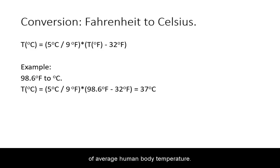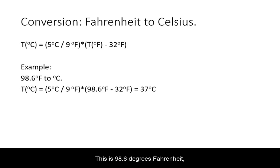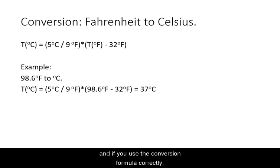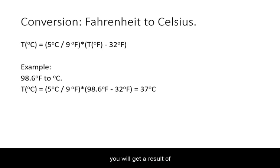Take the example of average human body temperature. This is 98.6 degrees Fahrenheit, and if you use the conversion formula correctly, you will get a result of 37 degrees Celsius.